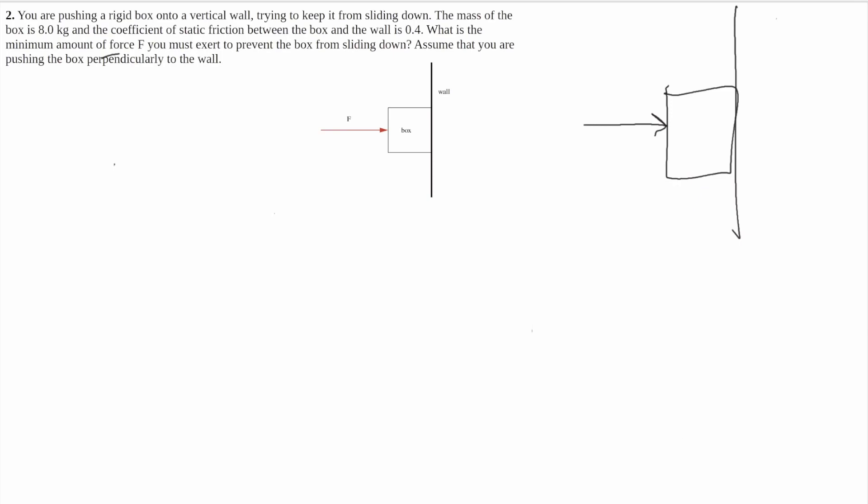So if you draw the forces, you have gravity coming down, call it mg. And then you also have the force of friction against the wall that points up, and you also have the normal force that opposes the force that you're pushing the box into the wall with. And these are going to be equal due to Newton's third law.